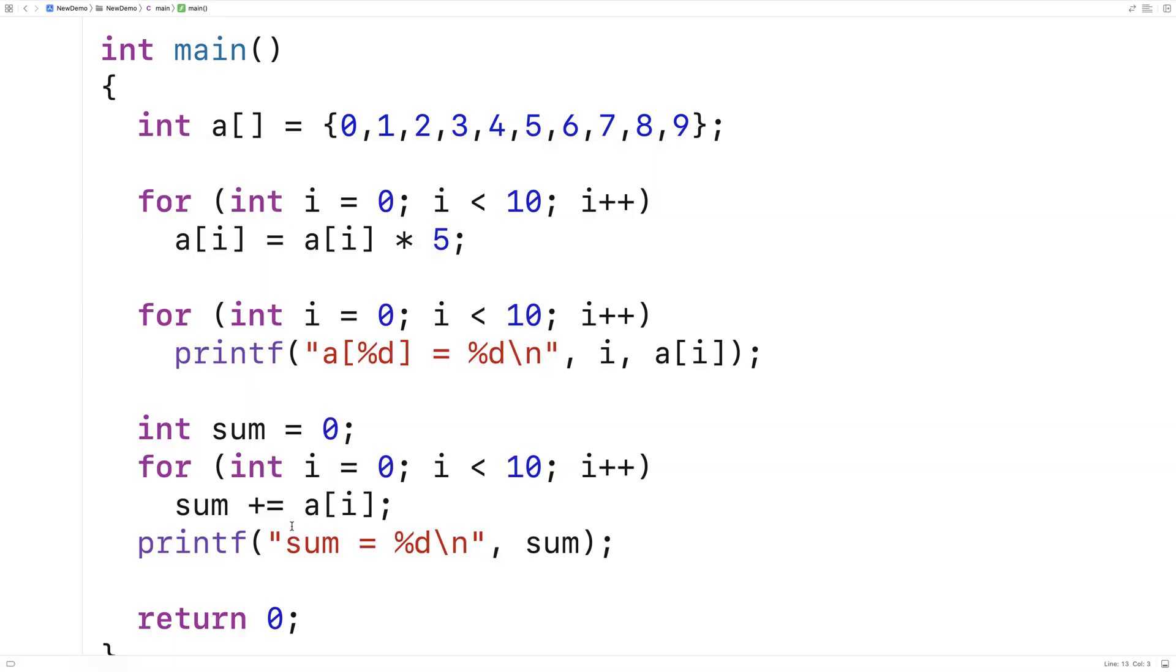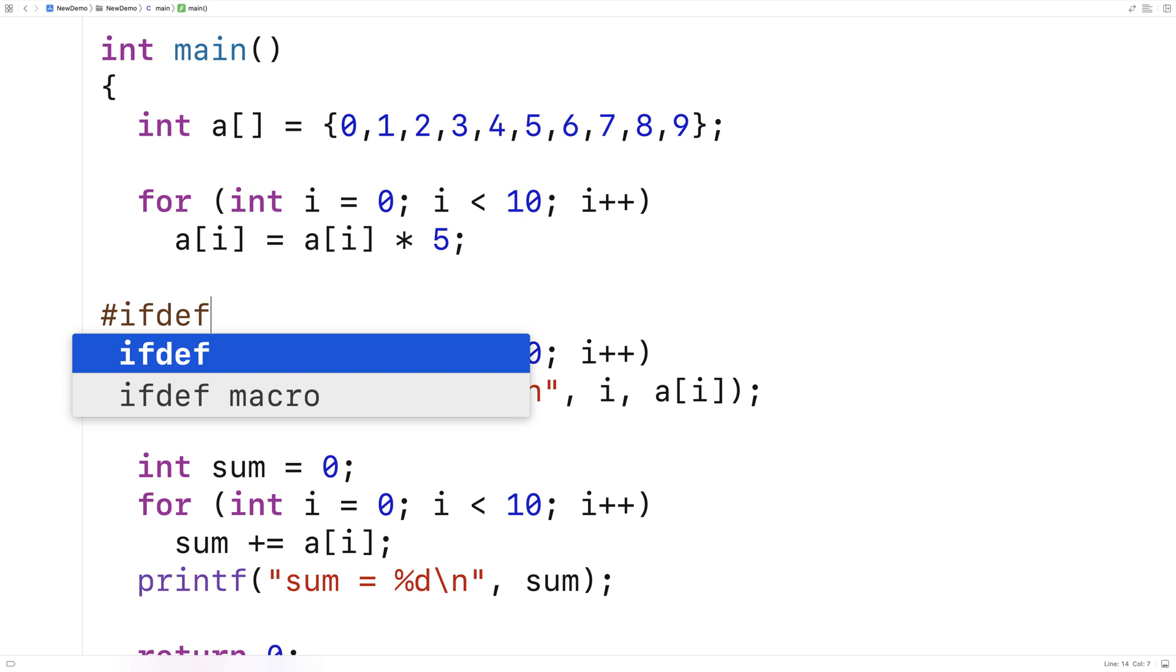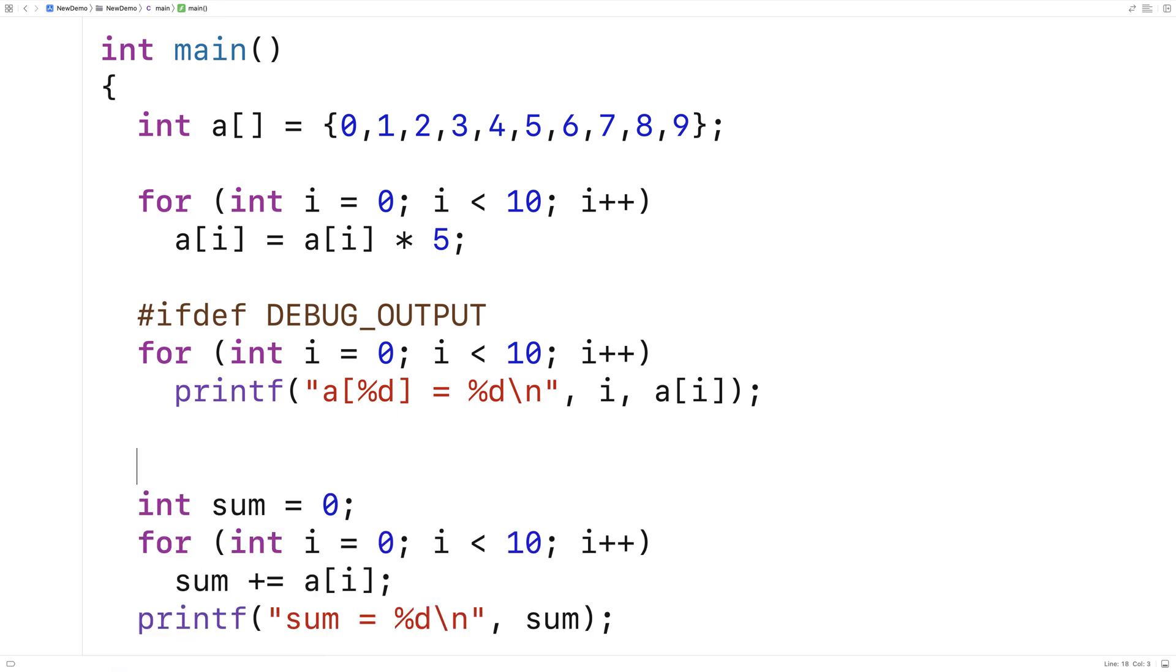What we could do to optionally run this is use what are called preprocessor directives. Here I'm going to say ifdef DEBUG_OUTPUT, and then here I'm going to say endif.